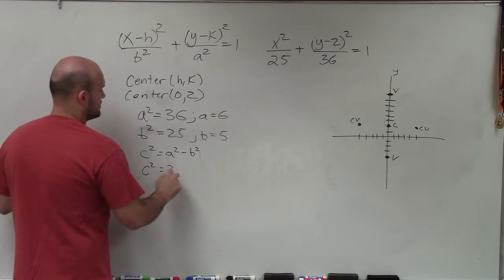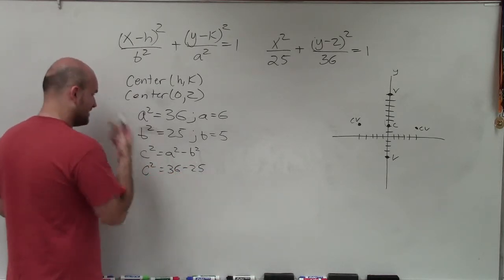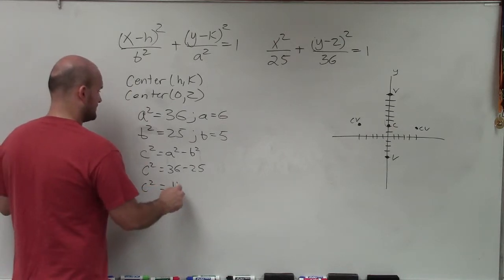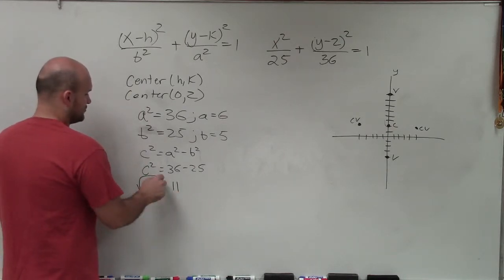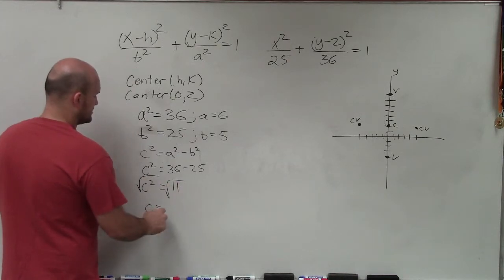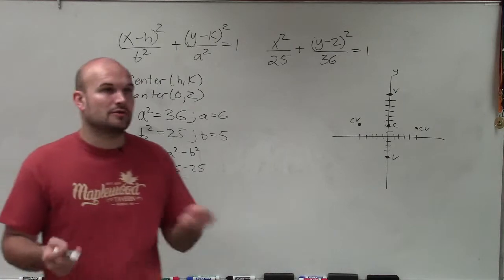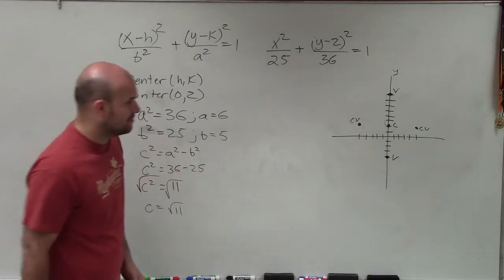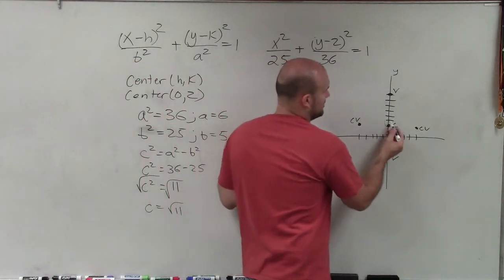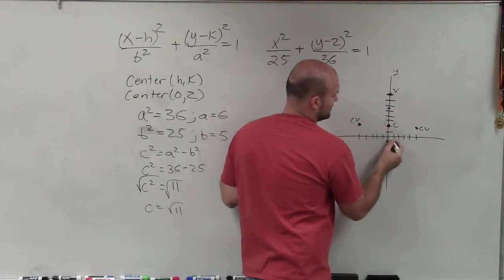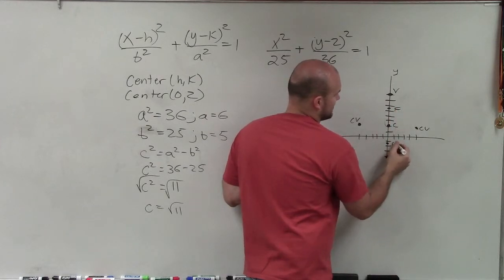Well, c squared equals 36 minus 25. c squared equals 11. Now I take the square root of both sides. Therefore, c equals the square root of 11, which is roughly going to be 3 and some change. So I'm going to go up 3, 1, 2, 3. And it's good between 3 and 4. And 1, 2, 3, in between 3 and 4. And I'm going to label those as my foci.